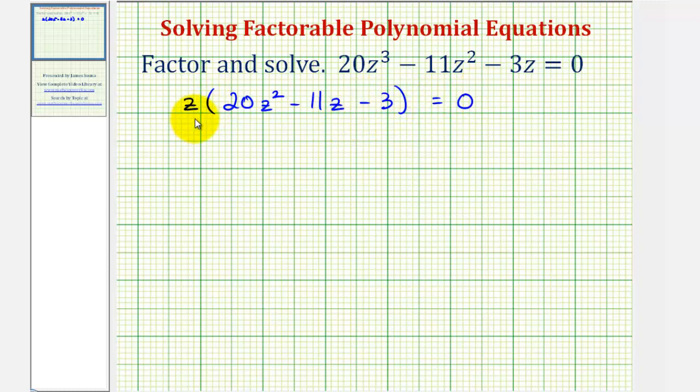Notice how we factored out one factor of z from each term. And if we distribute, we still have 20z cubed minus 11z squared minus 3z. Now we want to see if we can factor the trinomial inside the parentheses. And this is one of the more challenging types of trinomials to factor because the leading coefficient here is 20.